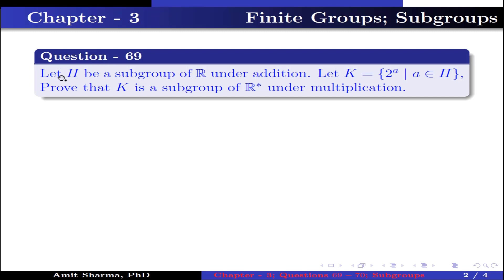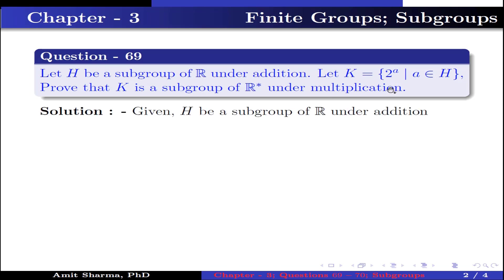Question number 69: Let h be a subgroup of ℝ under addition. Let k contain elements of the type 2 to the power a, where a belongs to h. Prove that k is a subgroup of ℝ* under multiplication.